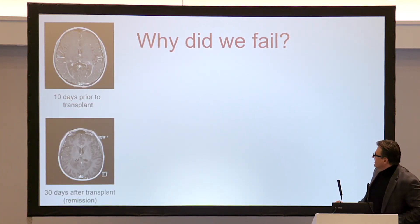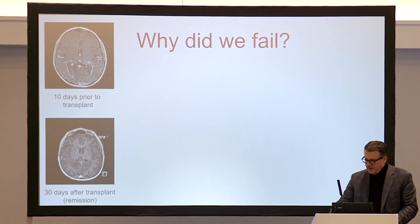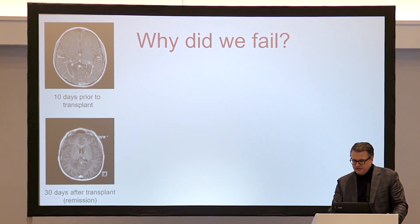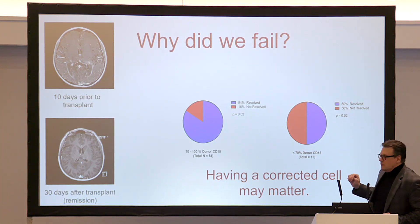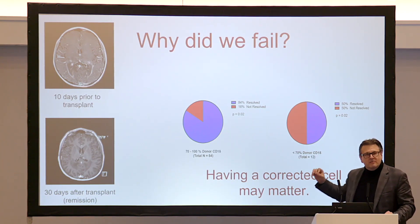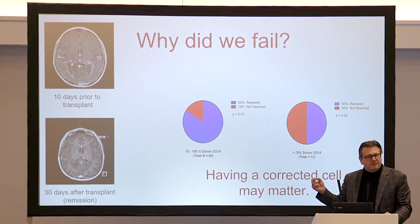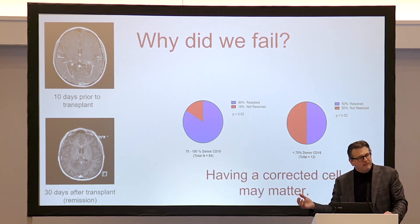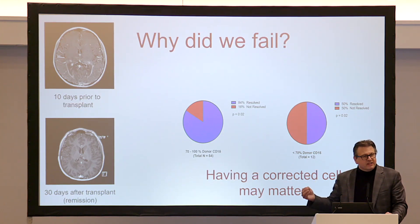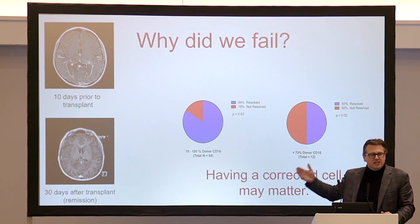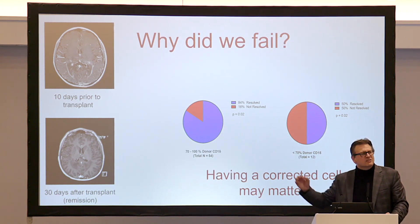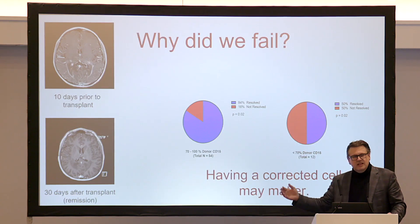Why did we fail? Why couldn't we achieve what transplant does in terms of gadolinium resolution? Looking at whether gadolinium resolves based on the amount of donor cells in circulation after allotransplant: the more donor cells you have, the more likely gadolinium is to go away. This leads us to believe that the donor cell is very important. If you don't have enough of them, your gadolinium won't go away. This is true for allotransplant but also for gene therapy — you need those corrected cells.